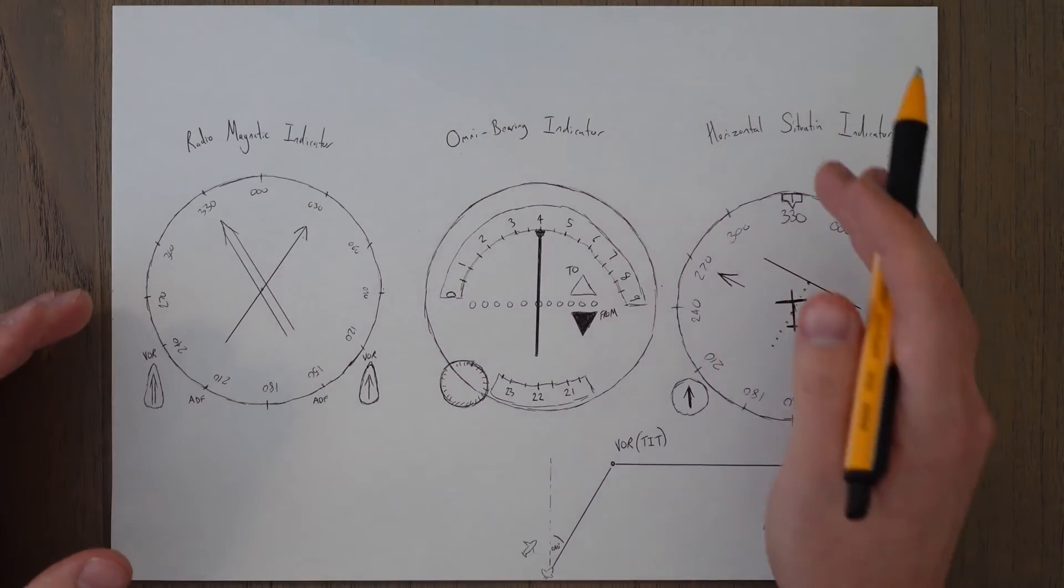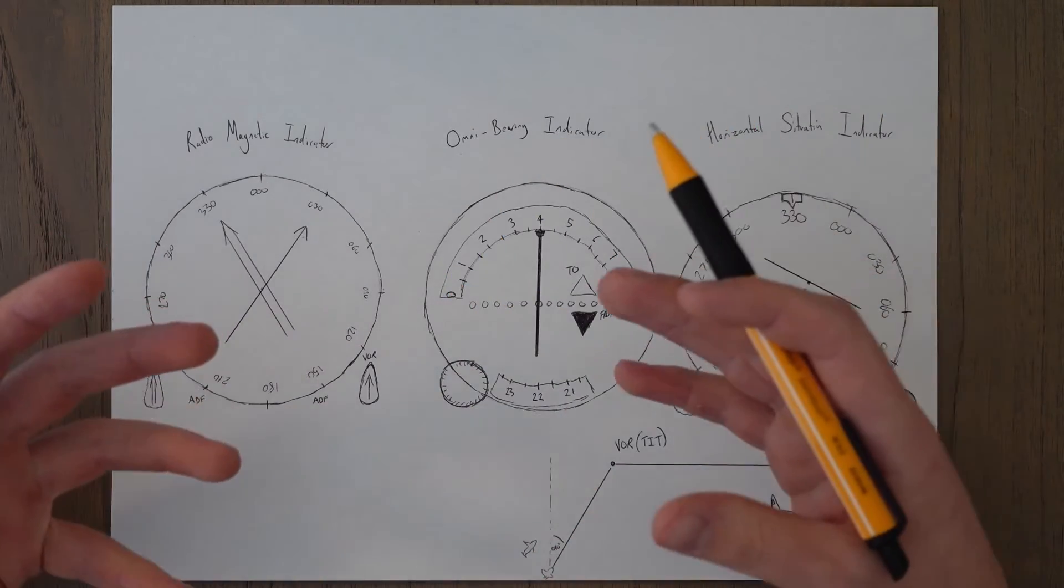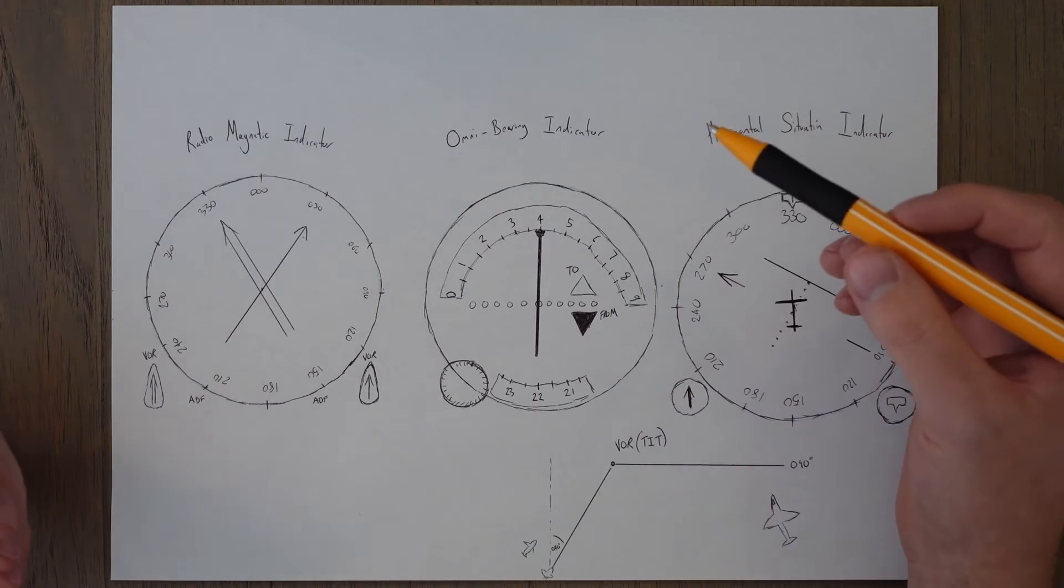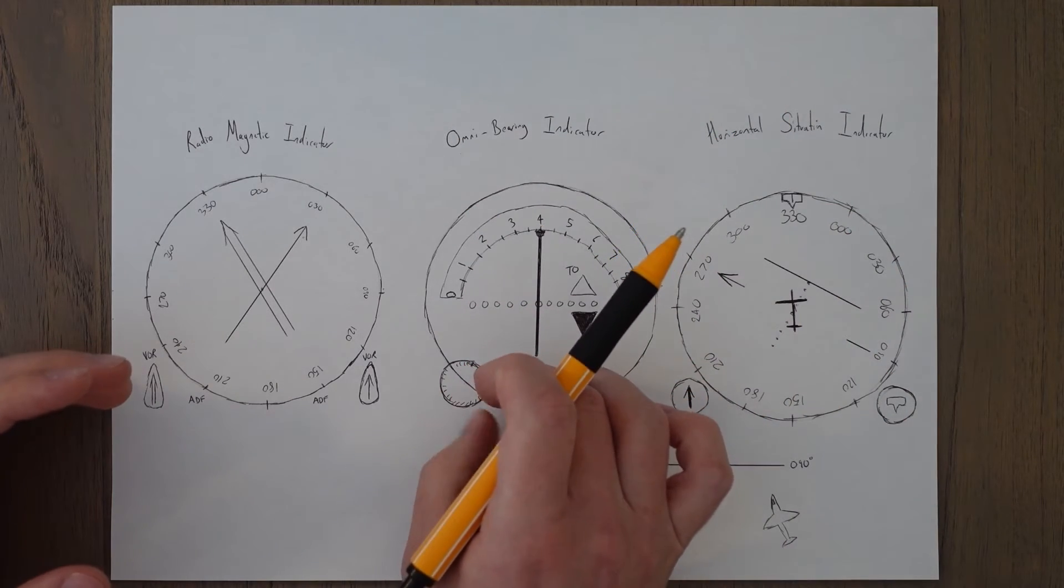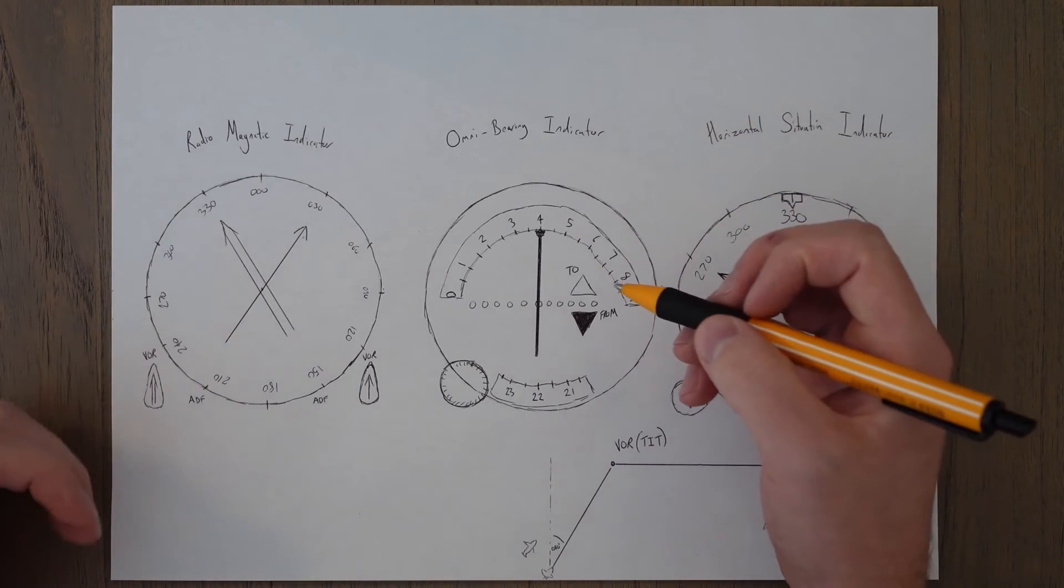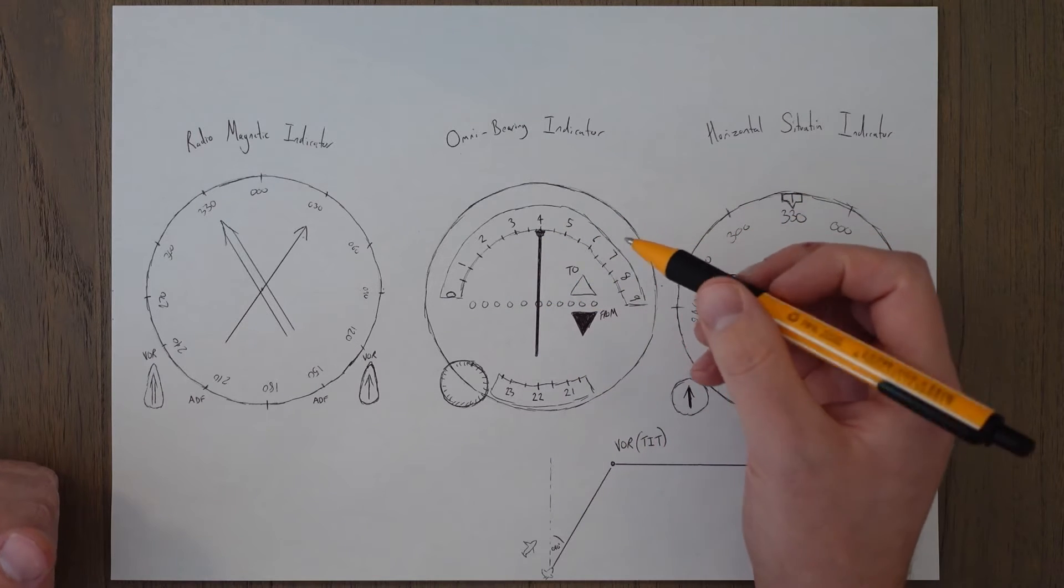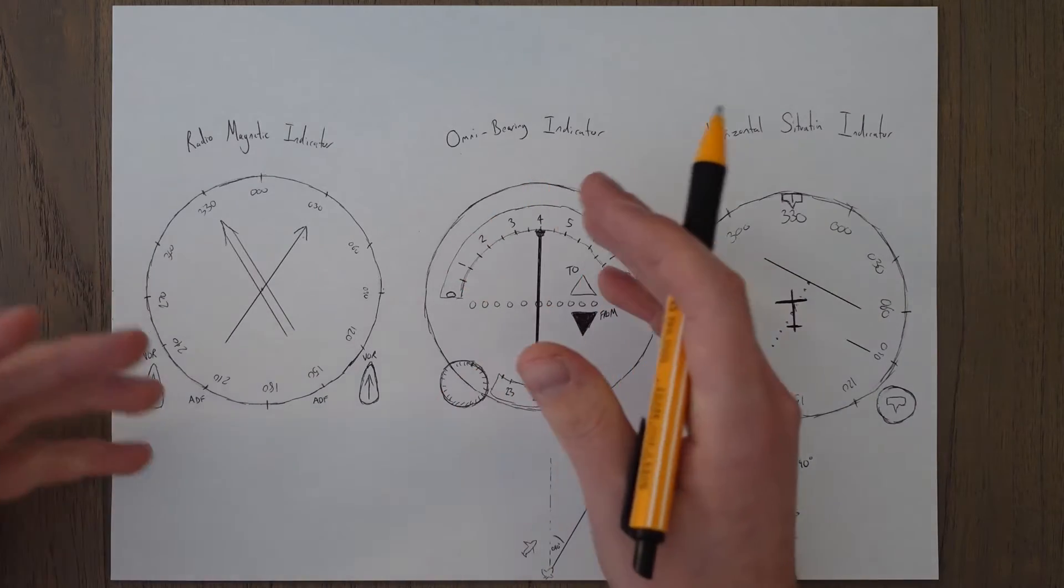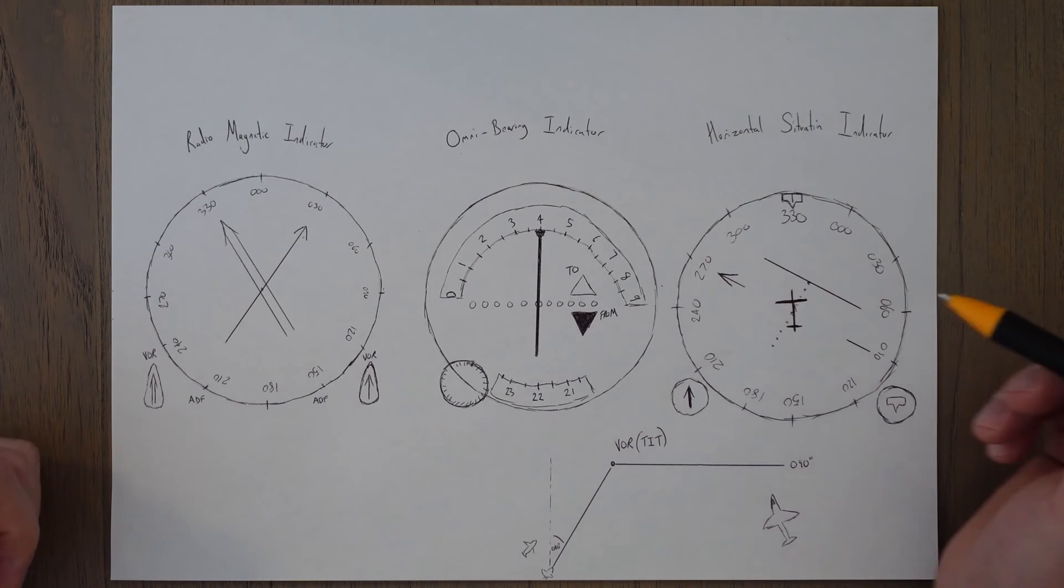A more useful way of displaying the VOR information, actually using that spokes on the wheel, all that bearing information that's being sent out, is by using something called an Omni Bearing Indicator, an OBI. Basically, what they are is a compass rose with a dial down here to select which bearing you want to follow along. It has something called a course deviation indicator, which is this needle here, as well as a to and from flag. Some will also indicate a no signal or failure indicator that might pop up in the bottom right corner, for example.